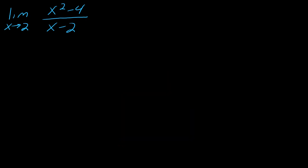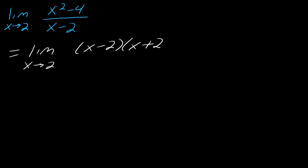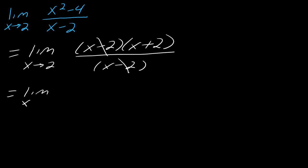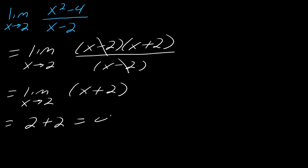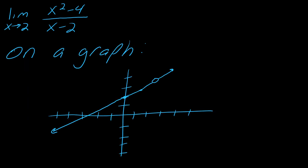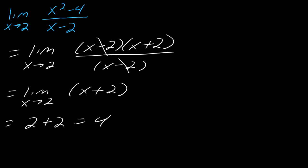The trick here is to factor and cancel. If I factor the top, it factors as (x minus 2)(x plus 2). You can see that the x minus 2's will drop out, and so I can evaluate the limit as just x plus 2. This is just a polynomial, so now I can plug in 2 to get 2 plus 2, which equals 4. Looking at the graph, it does indeed go to 4, so we can confirm this algebraically.